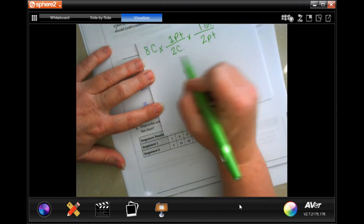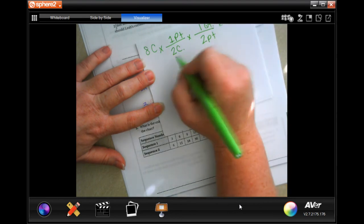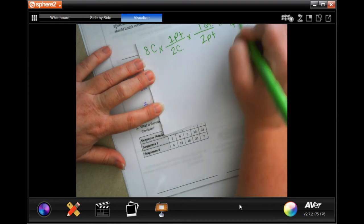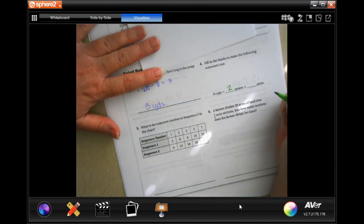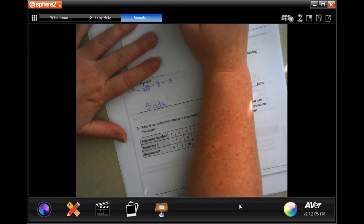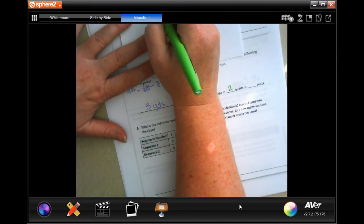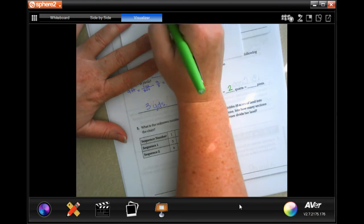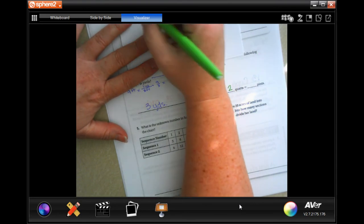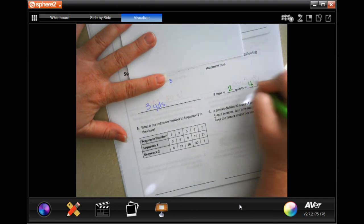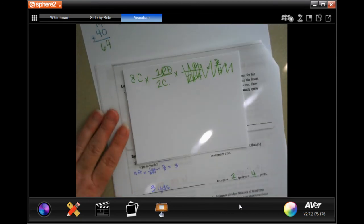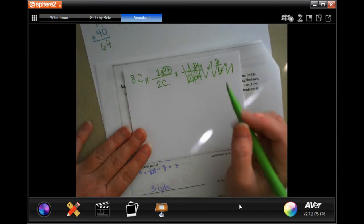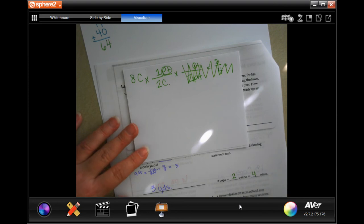So now I need to do eight divided by two times two is four, so it's going to be two quarts. Now if we were to stop right here, we would have how many pints. Well, eight divided by two is four. Okay, make sure that you guys write down your work.